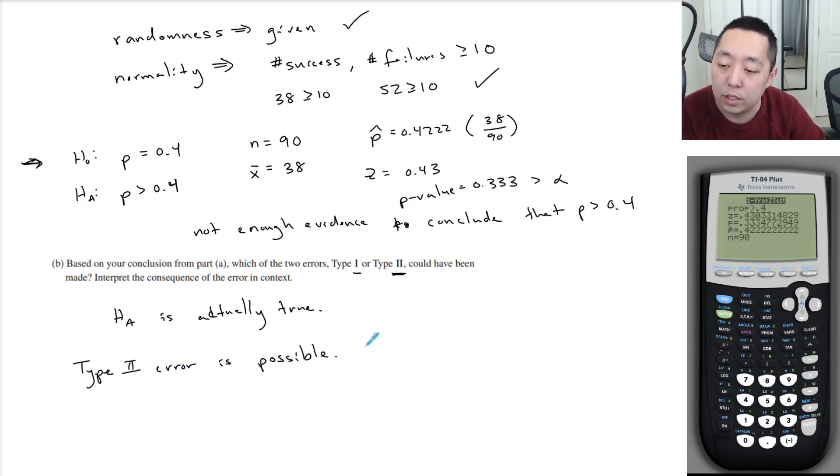And that is, we failed to reject H0 when we should have. And that means,